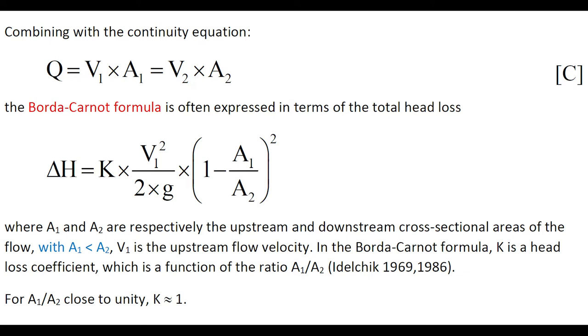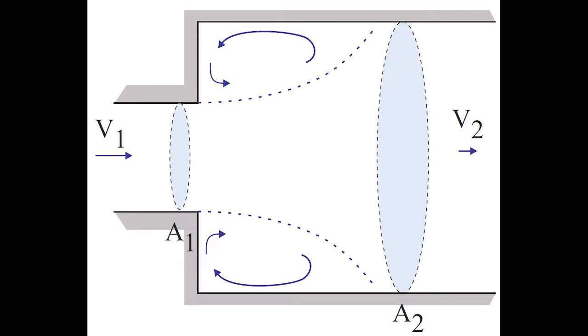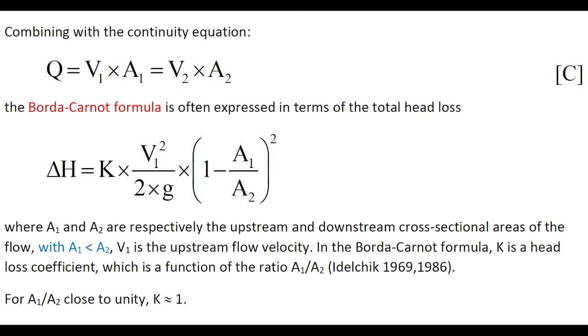Combining with the continuity equation, the Borda-Carnot formula can be derived in terms of the total head loss, in which k is a head loss coefficient function of the ratio of the cross-section area. When the ratio of the cross-section area is close to 1, k equals 1.